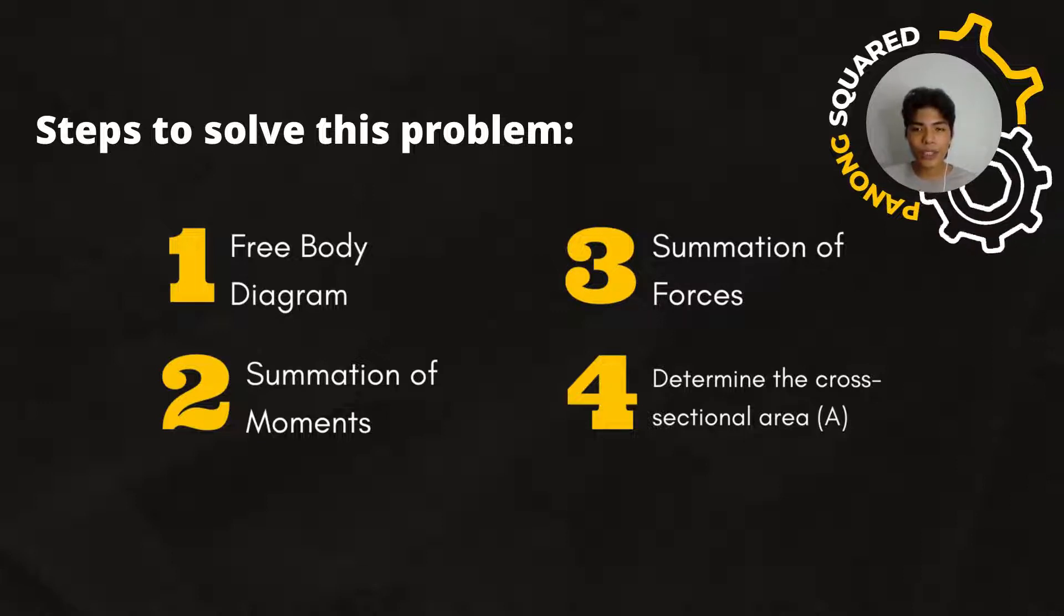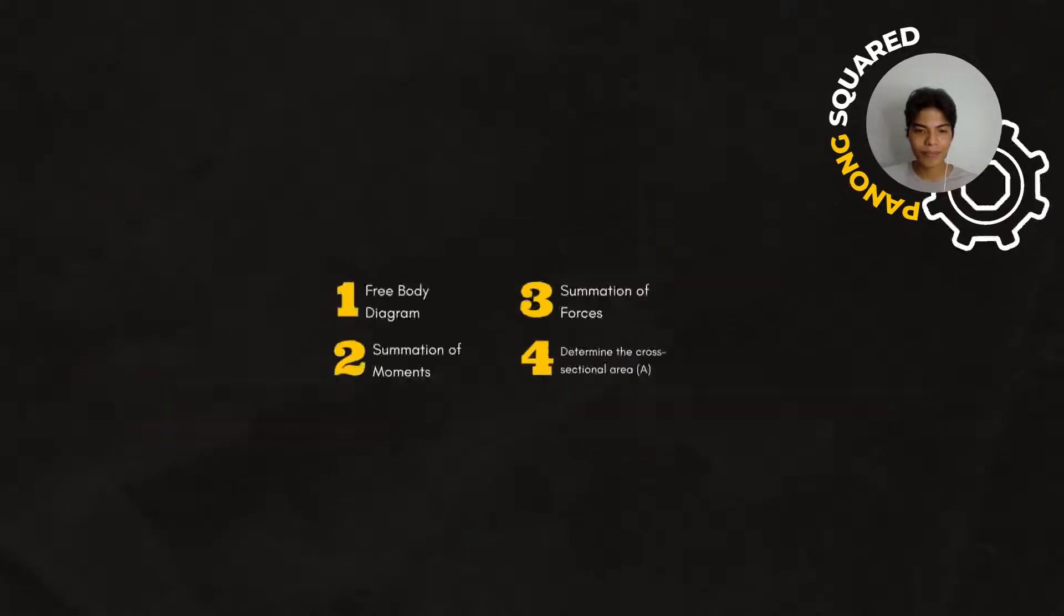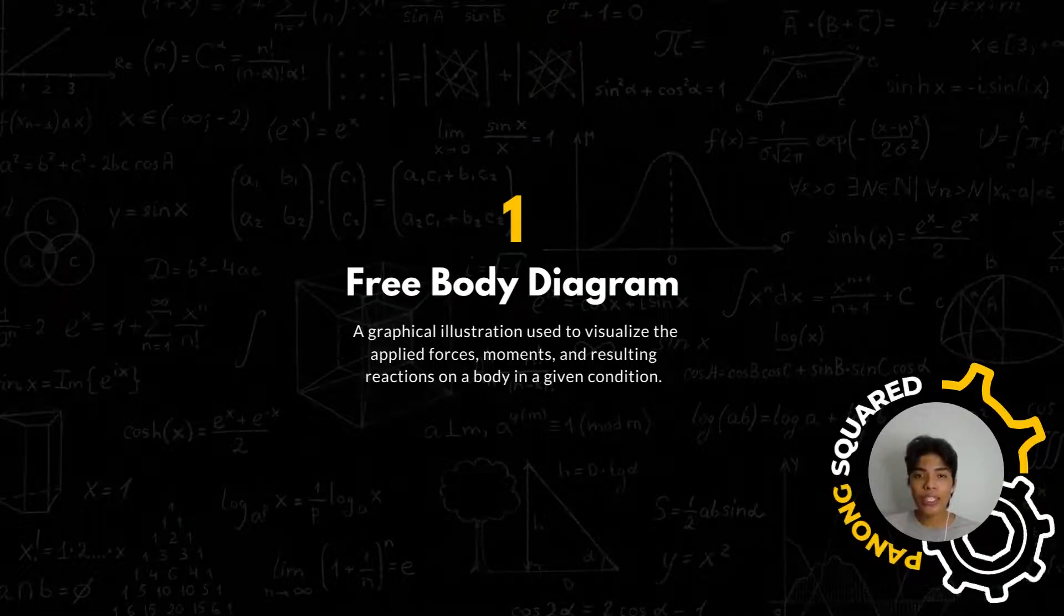Here is the step-by-step process on how to come up with the required solution. First, is to draw a free-body diagram. Next, is applying the equation of equilibrium. Then, we can calculate the summation of moments, which is our second step, and the summation of forces for our third step. Lastly, is to determine the cross-sectional area in the link AB. Without further ado, let's start the solution.